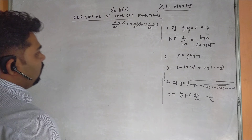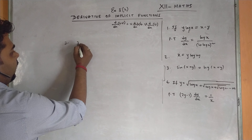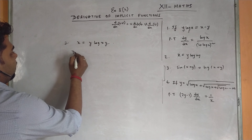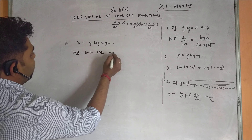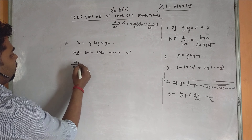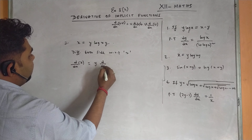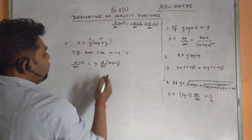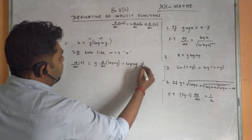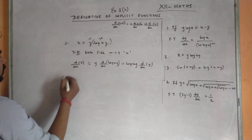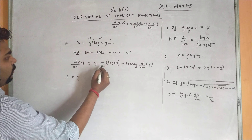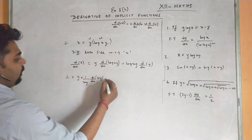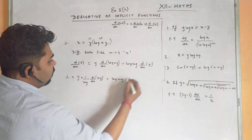Next question: x = y·log(xy). Differentiating both sides with respect to x, applying UV rule with y as u and log(xy) as v: d/dx(x) = y·d/dx(log xy) + log(xy)·d/dx(y). So 1 = y·(1/xy)·d/dx(xy) + log(xy)·dy/dx.